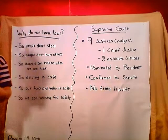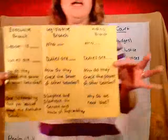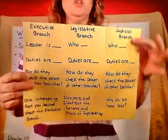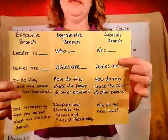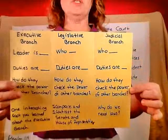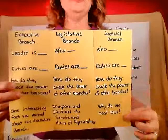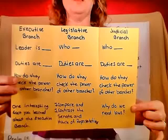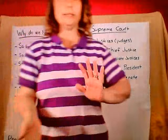This week we've been working on our trifold pamphlet. Today we are finally going to finish it and complete the judicial branch section. In the judicial section of the pamphlet, I want you to write: who is in the judicial branch, what their duties are, how they check the powers of other branches, and I want you to write why we need laws — explain why laws are good for us and why laws are important.